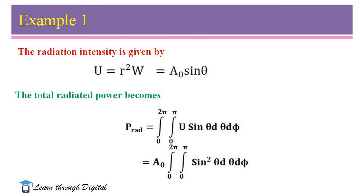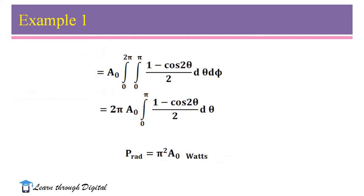Now I am considering an example. In this example, radiation intensity is given, and from this we will calculate the power radiated by the antenna. Radiation intensity is given by U = R squared W = A₀ sinθ. The total radiated power P_rad equals the solid angle integration, with phi from 0 to 2π and theta from 0 to π, of U sinθ dθ dφ. Substituting U = A₀ sinθ, the equation becomes A₀ times the double integral of sin²θ dθ dφ. Now, sin²θ can be written as (1 − cosθ) / 2.